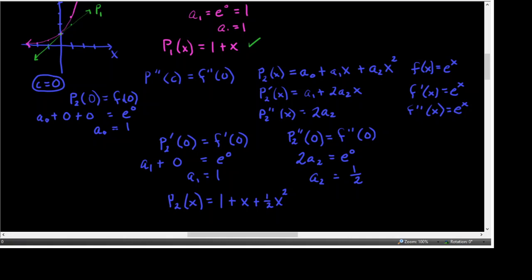I'm graphing this in my calculator right now. I've got E to the X in Y1. In Y2 I'm going to go ahead and graph 1 plus X, and then in Y3 I'm going to type 1 plus X plus X squared divided by 2. I'm going to do this in a zoom 4 window — just hit zoom then 4 — so you can see what that looks like.